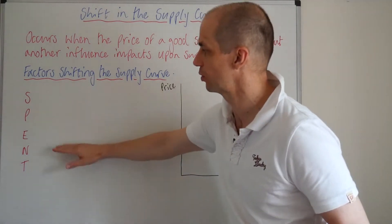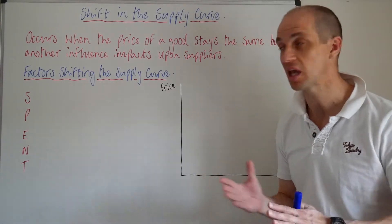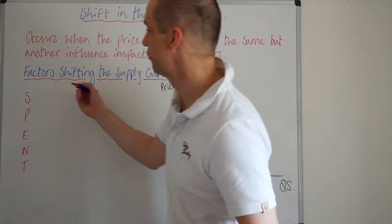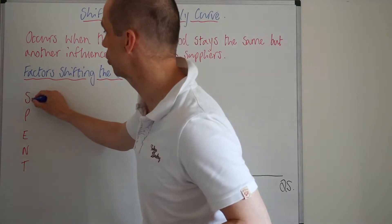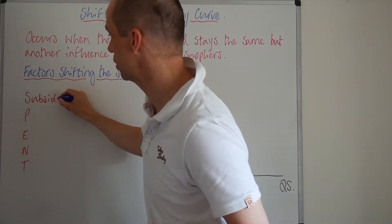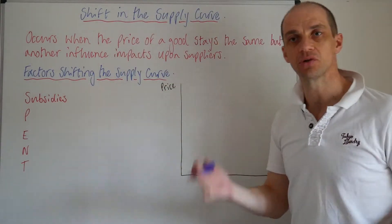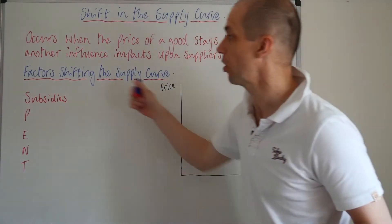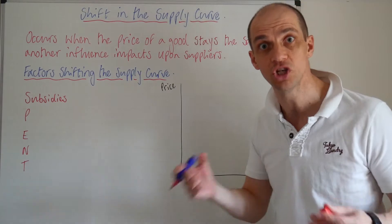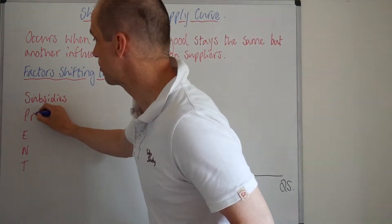I break this down to a little acronym just to help you remember some of these key factors — SPENT. So first up, it could be that the business receives a subsidy or subsidies generally. Subsidies are payments to the suppliers and they artificially reduce the costs of supply.